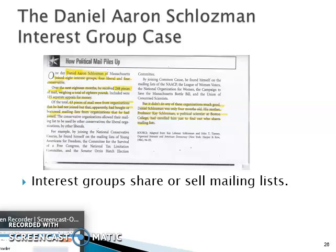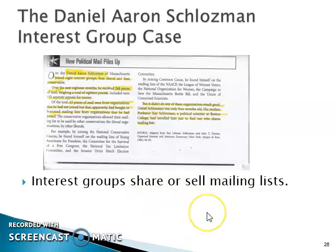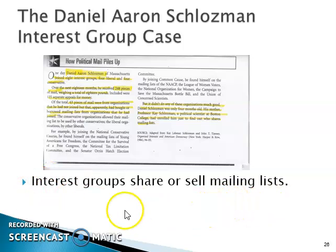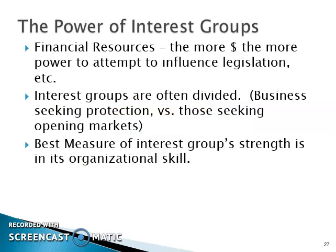None of this did those organizations much good — Daniel Scholzman was only four months old. His mother, Professor Kay Scholzman, a political scientist at Boston College, had enrolled him just to find out who shares mailing lists. Here's the point: when you join an interest group you'll find that you start getting mailings — or these days emails — from organizations you didn't join, soliciting you to join them or donate money. On the test, when I ask what the case of Daniel Aaron Scholzman represents, the answer is that interest groups share or sell their mailing lists.